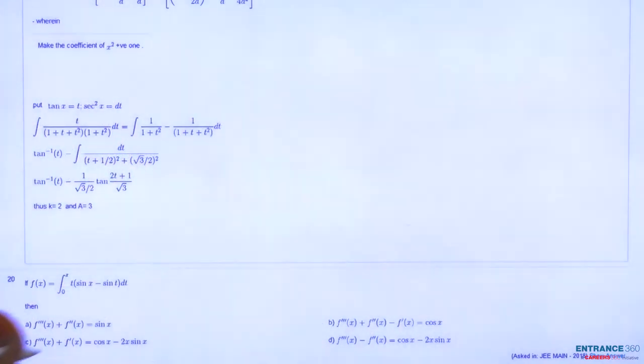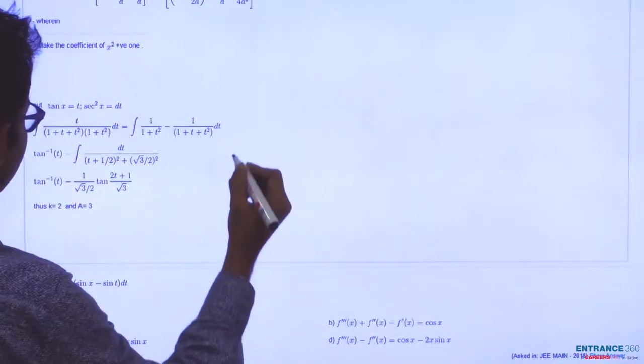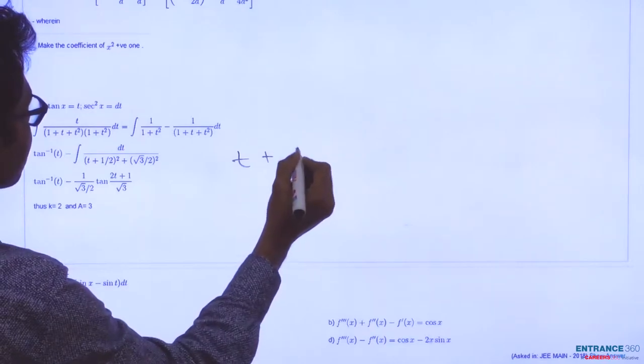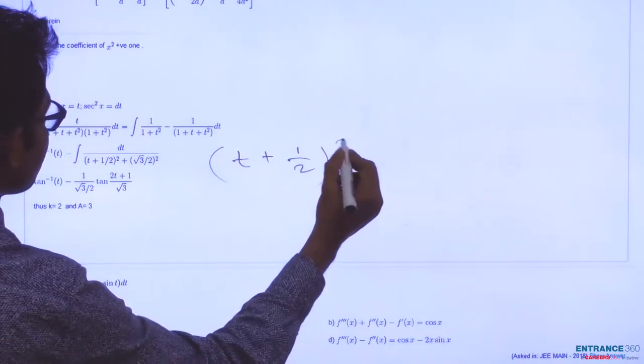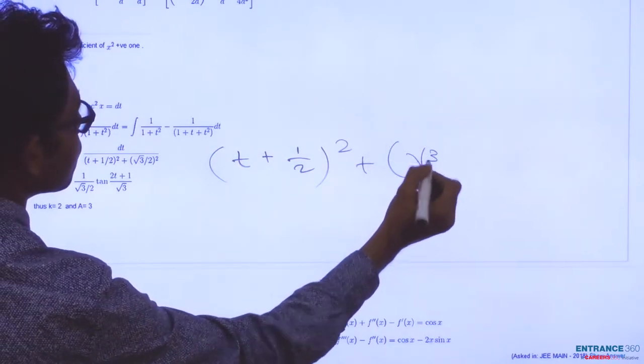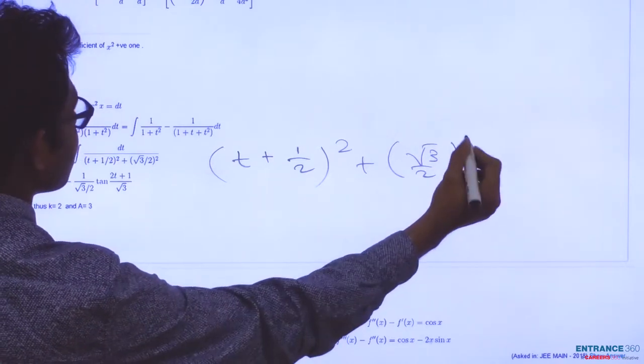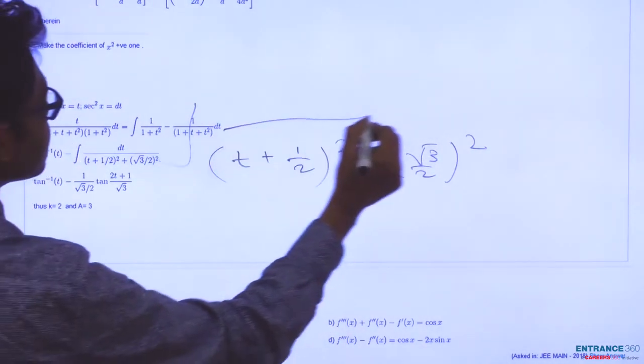After writing 1 plus t plus t squared in square form we will get (t plus 1/2) squared plus (root 3 by 2) squared. This is the integration.